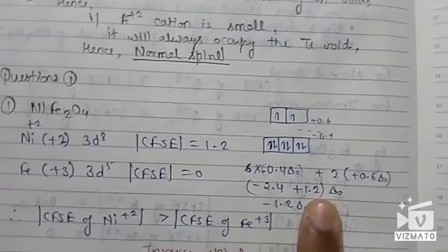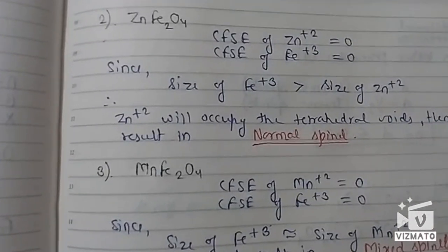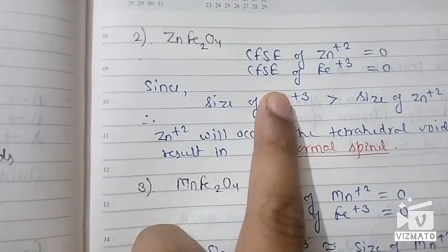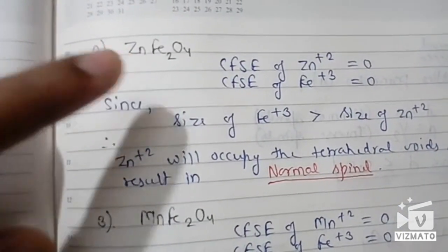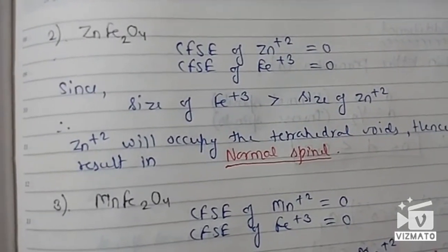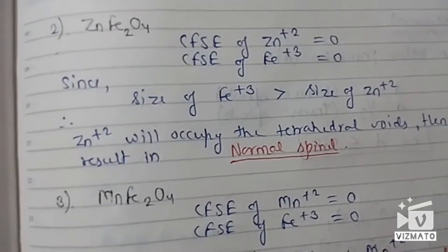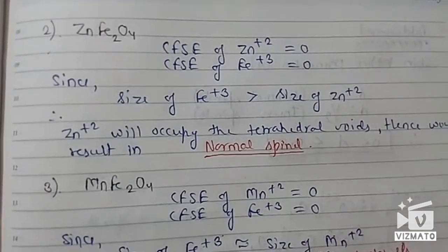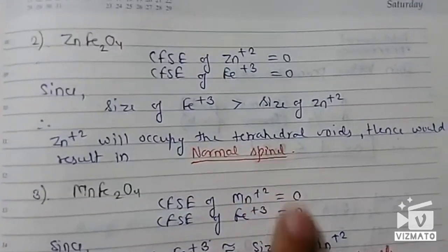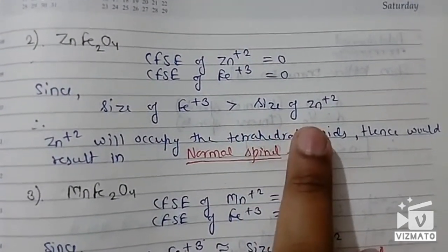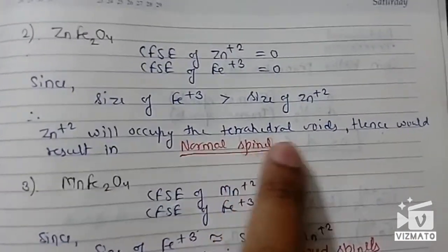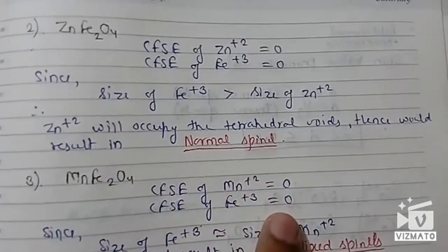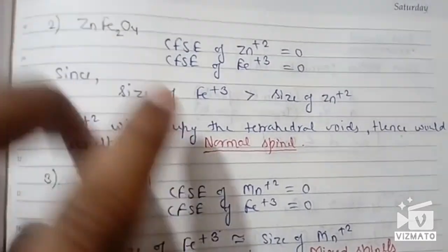For ZnFe₂O₄, Fe³⁺ is a d⁵ configuration and Zn²⁺ is d¹⁰, so the CFSE for both is 0. We cannot judge normal or inverse spinel from CFSE alone. However, the size of Fe³⁺ is greater than the size of Zn²⁺, so the smaller Zn²⁺ will occupy the smaller tetrahedral void, resulting in a normal spinel.